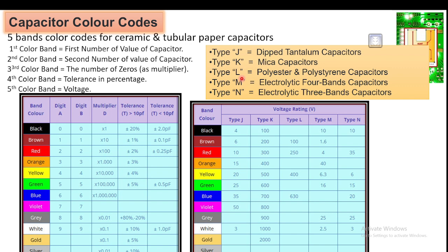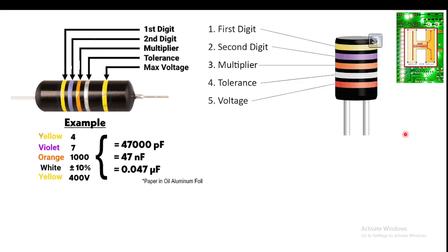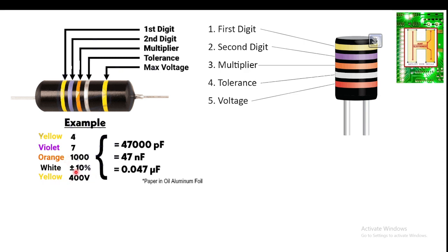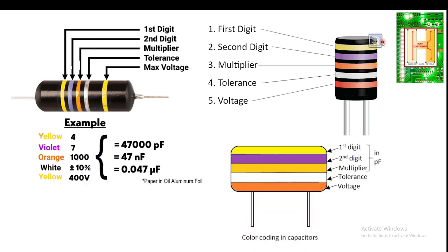For example: the first band is yellow (4), second is violet (7), third is orange (multiplier × 1000), fourth is white (±10% tolerance), giving 47,000 picofarad = 47 nanofarad = 0.047 microfarad. The fifth band is yellow, which corresponds to L type — polyester — and represents 400 volts. So the capacitor is 0.047 microfarad at 400 volts.